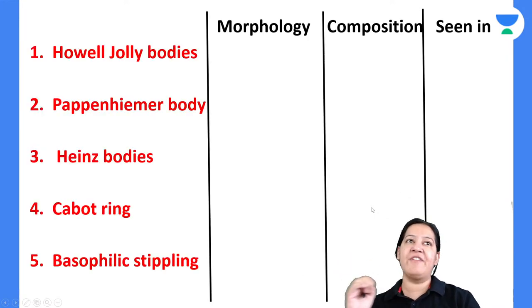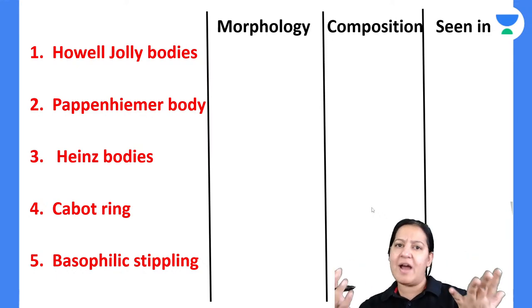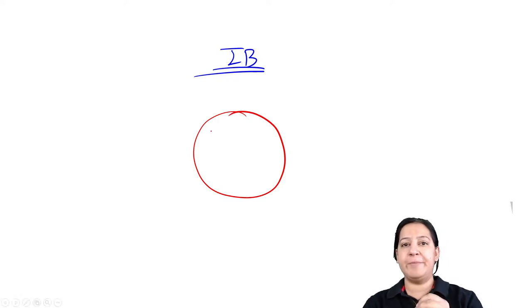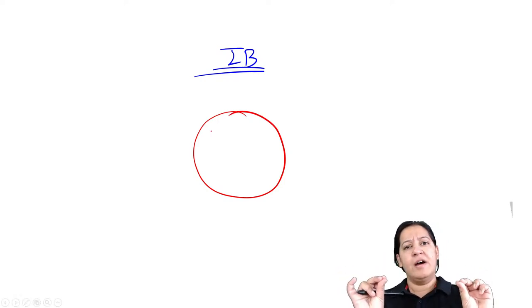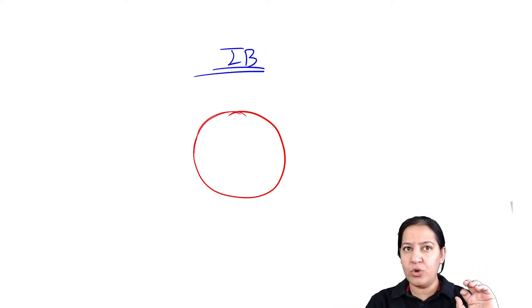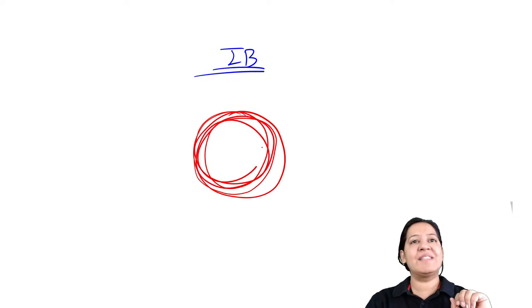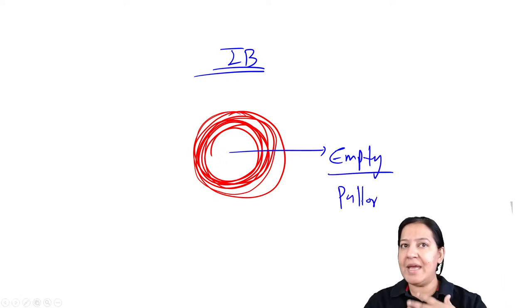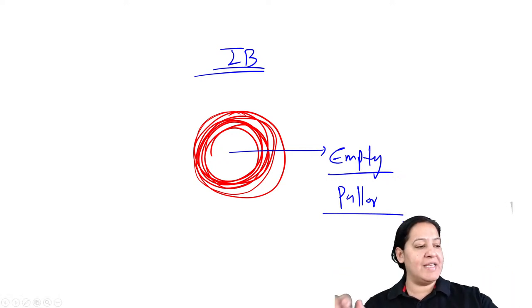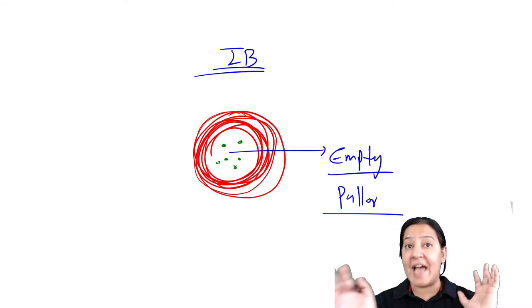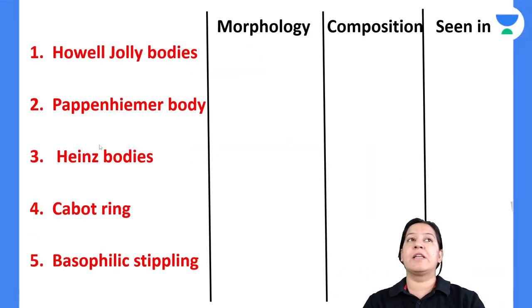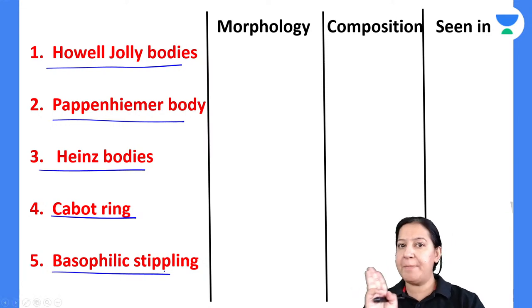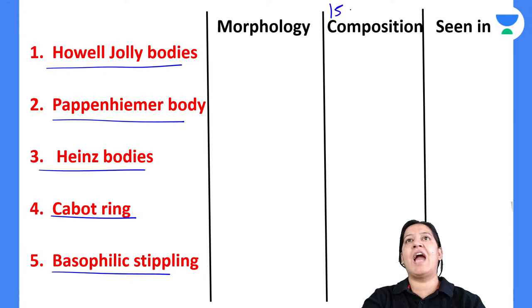There are five main types of RBC inclusion bodies. An RBC is a non-nucleated, biconcave cell — the peripheral two-thirds contains hemoglobin (pink), and the central one-third is empty (the pallor). If any inclusion bodies are present in the cytoplasm of the RBC, they are known as RBC inclusion bodies. The five types are: Howell-Jolly body, Pappenheimer body, Heinz body, Cabot ring, and basophilic stippling.